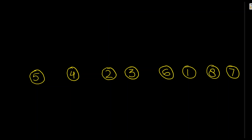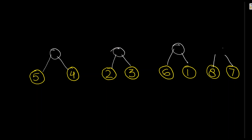Let's say I have teams playing games: 5, 4, 2, 3, 6, 1, 8, and 7. If I need to find the winner, these two will have a match, these two will have a match, and so on. The winners from each match go to the next round until we get the overall winner. Let's put a condition that the team with the minimum number wins.